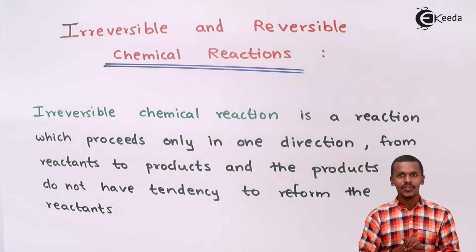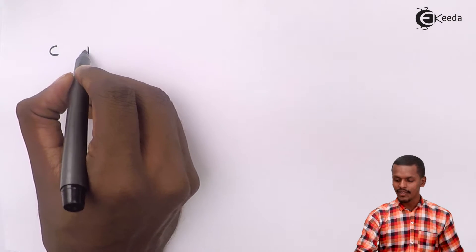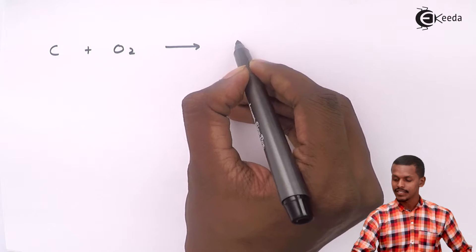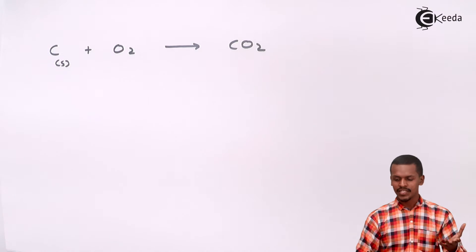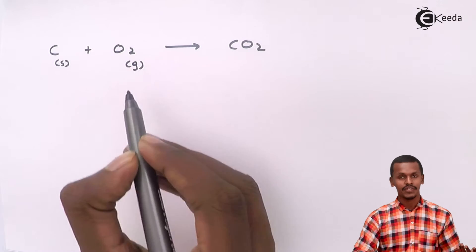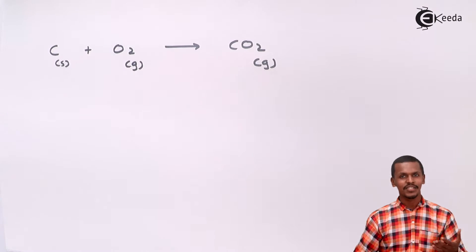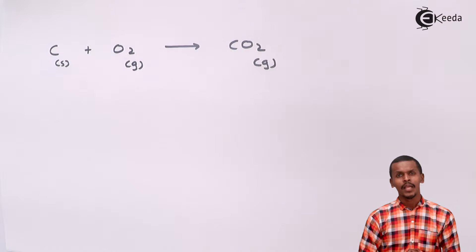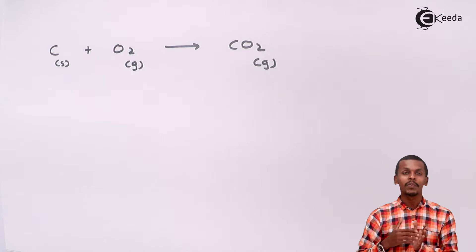Let me give you an example to make it very clear what irreversible reactions are. Suppose carbon is reacting with oxygen to give carbon dioxide, that is CO₂. In this case, we also represent the physical state of the reactants — oxygen is in the gaseous phase, and carbon dioxide is also in the gaseous phase. So in terms of phase, this is a heterogeneous chemical reaction, but in terms of the forward reaction, this is basically an irreversible reaction — because once the carbon has reacted with oxygen, it forms carbon dioxide.